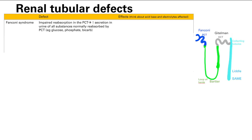Can we now turn our attention to renal tubular defects? We're going to talk about renal tubular acidosis. All of these are problems with the renal tubules. We're going to go down from the proximal tubule and work our way along all the way around the tubules and see all the problems that can occur.